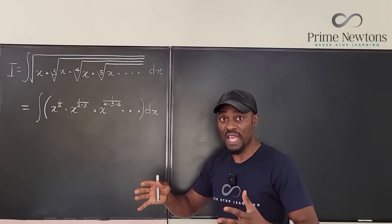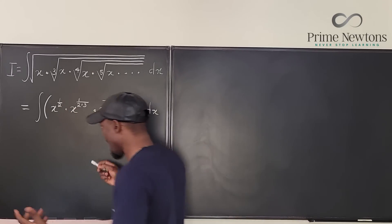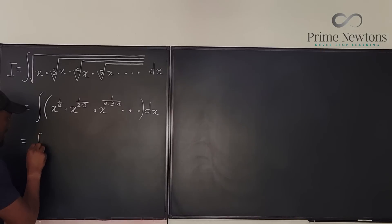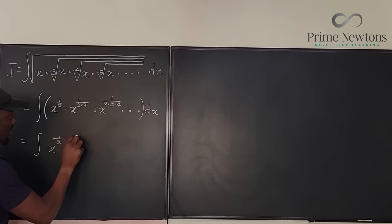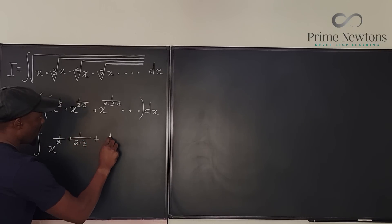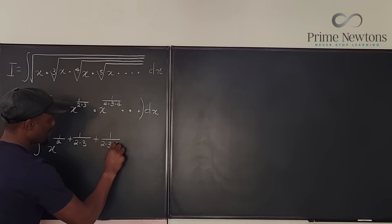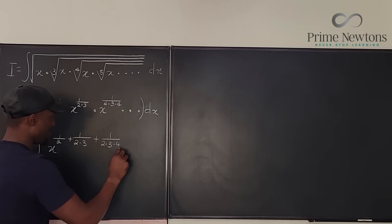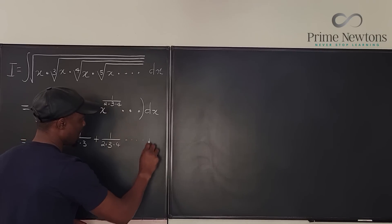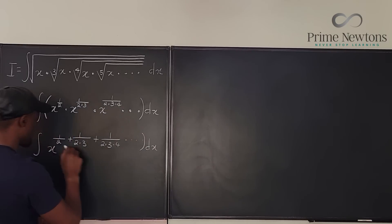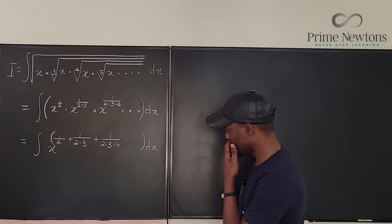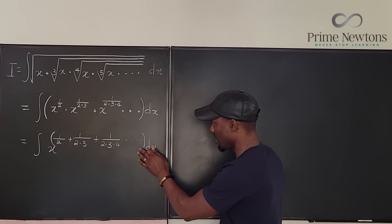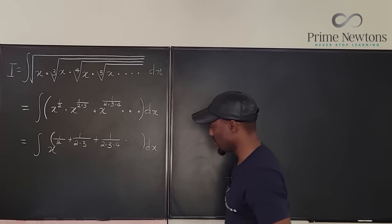When you multiply terms like this, what you end up doing to the exponents is adding all of them together. So what we're actually saying is that this is the integral of X raised to the power 1/2 + 1/(2·3) + 1/(2·3·4) + ... dx. All of these form the exponent of X.